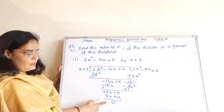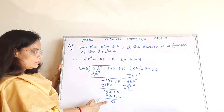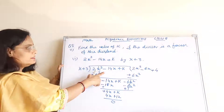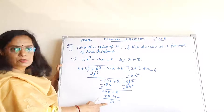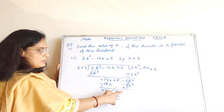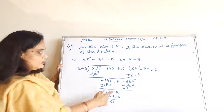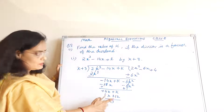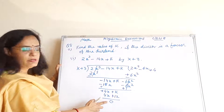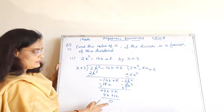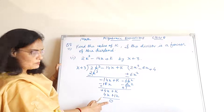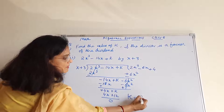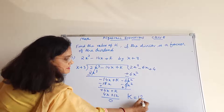Remainder 0 laana hai, kyunki X plus 3 is the factor of the dividend. Remainder 0 laana hai, toh K ki value kya honi chahiye? K ki value agar 12 hogi, jab hum yahan sign change karenge toh remainder 0 aa jaega. Plus 12 minus 12 is equal to 0. So value of K becomes 12. This is the answer.